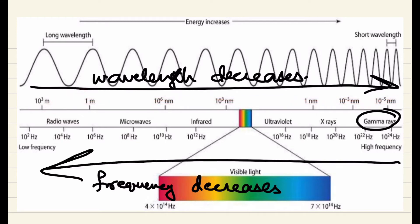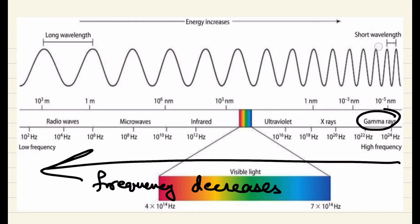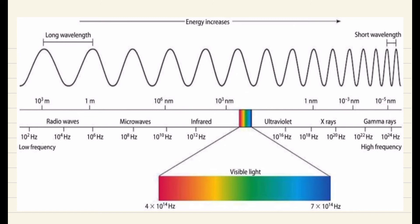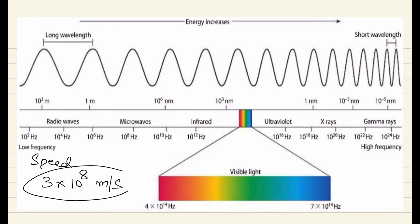This is how wavelength and frequency vary in the electromagnetic spectrum, and you should know what types of radiations are included. One more common thing to remember: the speed of light stays constant throughout the electromagnetic spectrum, no matter what type of wave we have. The speed for all of these waves is 3 times 10 to the power of 8 meters per second.